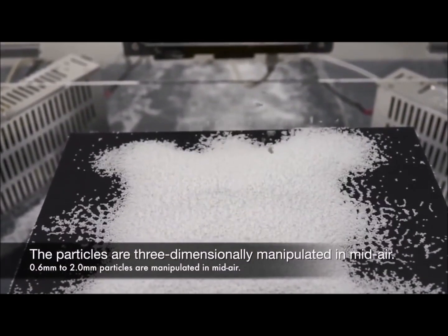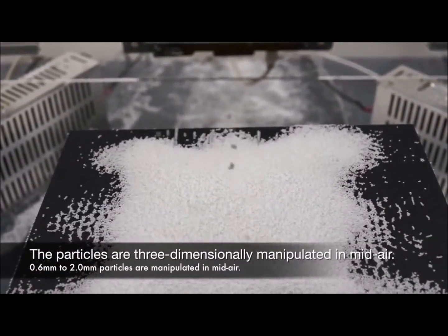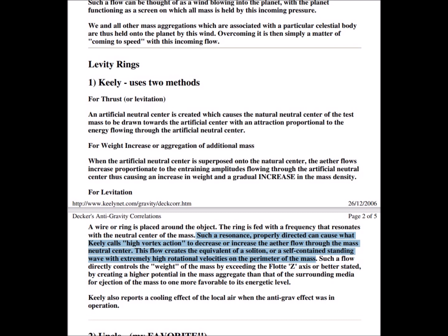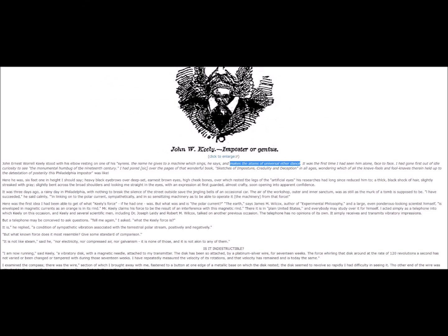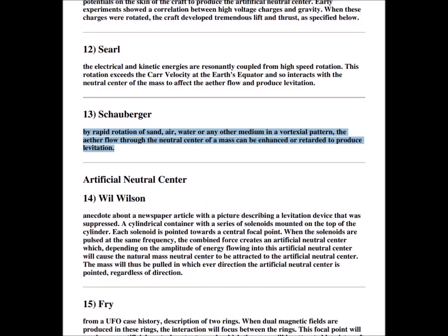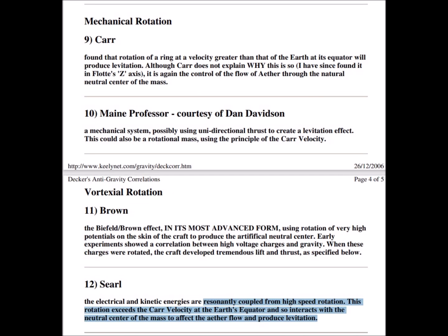John Worrell Keeley's vibratory sympathy concept was to use acoustic vibrations to cause acoustic mechanical rotation on a molecular level to overcome gravity. Others like Victor Schauberger, John Searle, and Otis Carr have espoused similar ideas but envision potential gravity modification via large-scale mechanical rotation.